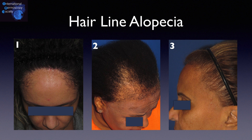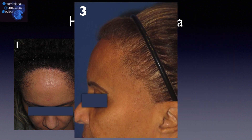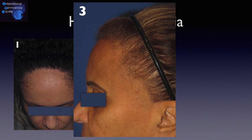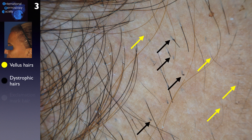Last but not least, the third case: we have a hairline alopecia, mainly in the temporal area, with many vellus hairs and eyebrow involvement. In tricoscopy, we notice many vellus hairs and even small exclamation mark hairs.